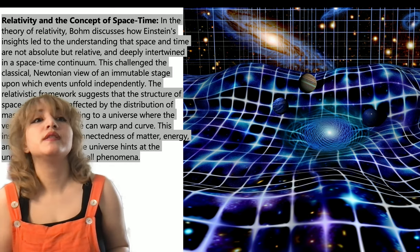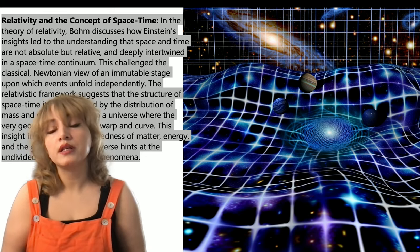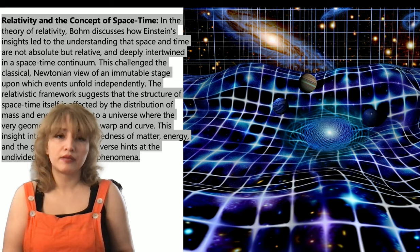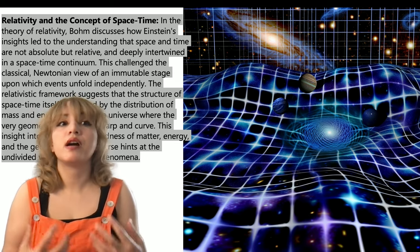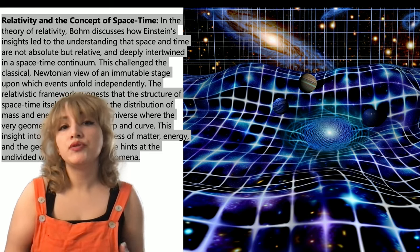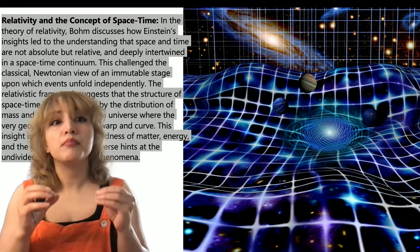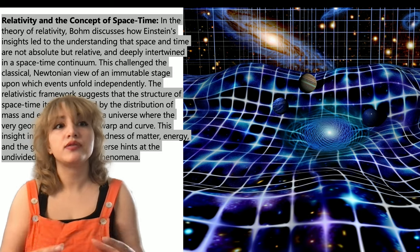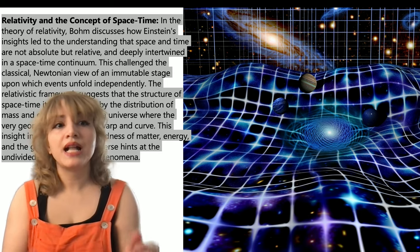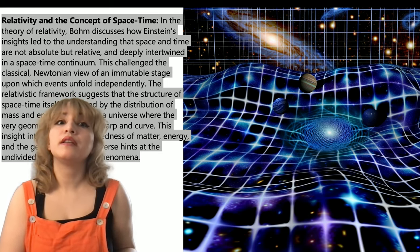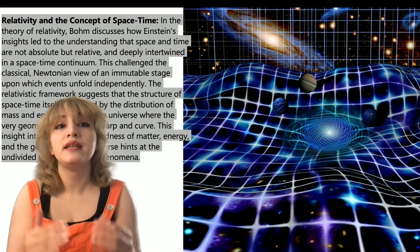Bohm also uses relativity and the concept of space-time to support his idea of implicate and explicate order. In the theory of relativity, Bohm discusses how Einstein's insights led to the understanding that space and time are not absolute but relative and deeply intertwined in a space-time continuum. This challenged the classical Newtonian view of an immutable stage upon which events unfold independently.